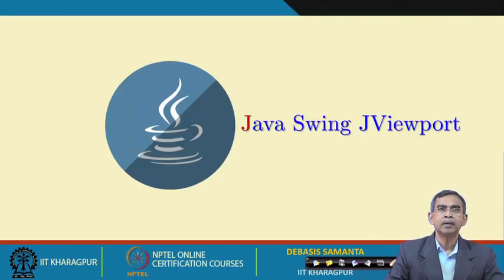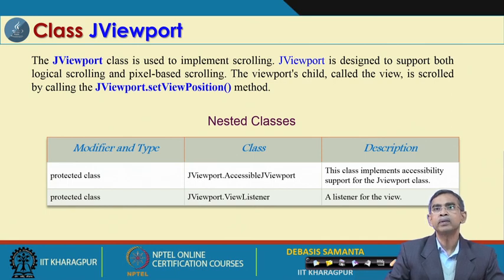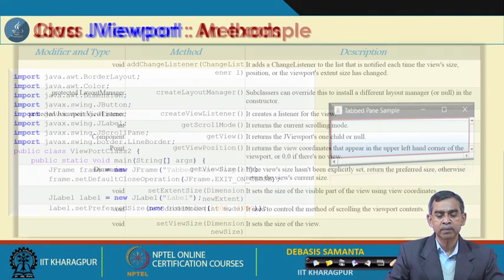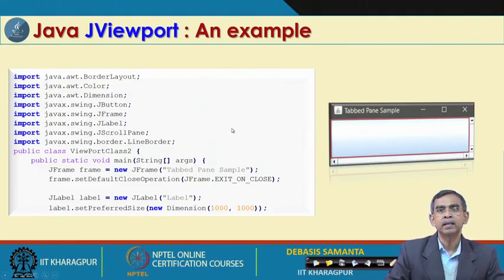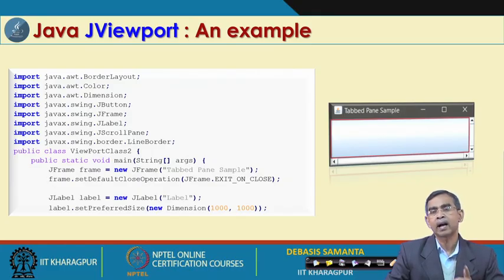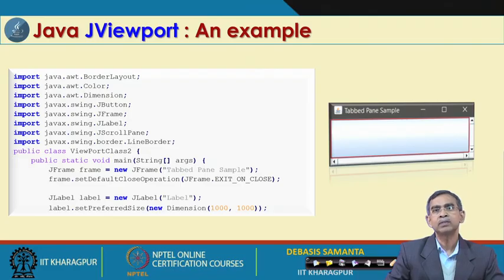JViewport looks like a text area, but is also similar to a panel. It has 2 nested classes, 2 fields, 1 constructor, and many methods. The example displays the viewport where background and theme settings can be customized using different constructors. I used the default constructor here, but I advise you to try the different constructors already mentioned and run the program. The same advice applies to all examples — try all constructors for practice.